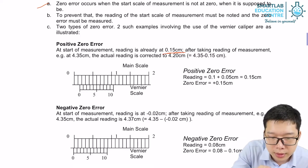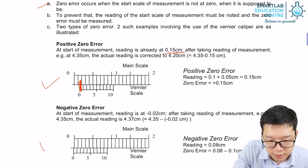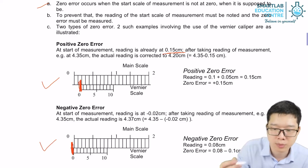So the graph demonstration is over here. For positive, your vernier scale is actually somewhere more than zero. For negative, your vernier scale is somewhere smaller than zero.